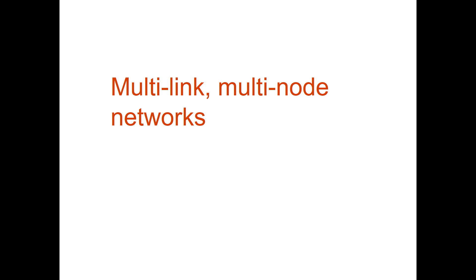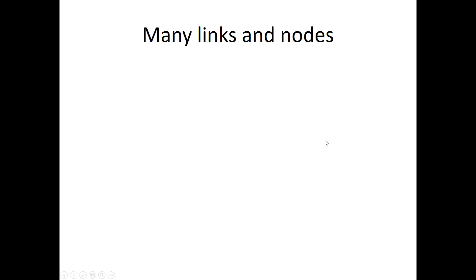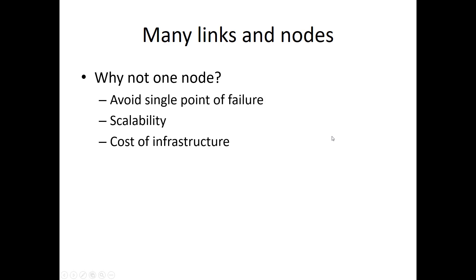In this section we look at multiple links but also multiple nodes. We've seen how we can build data link networks and extend them by switching them together by a bridge, and later we'll look at a node being a router on the network layer. So what's the purpose of having many links and nodes? Why not just one node? Well, if that node fails, there surely is a single point of failure. And there's an issue of scalability if you have many users, many computers, and a large geographic area. The cost of the infrastructure might not be the cheapest either if you build with many links and just one node.